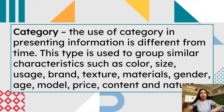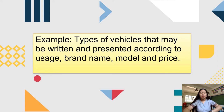In terms of category, the use of category in presenting information is different from time. This type is used to include similar characteristics such as color, size, usage, brand, texture, materials, gender, age, model, price, content, and nature. For example, you can categorize types of vehicles and present them according to their usage, brand name, model, and price.